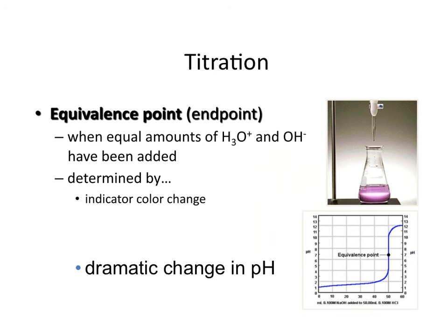During a titration, we have an indicator in our unknown solution. When we reach something called an equivalence point, we know that we have an equal amount of H3O+ and OH−, meaning neutralization has occurred. We determine this visually because the indicator changes color, and at that point we know we've reached the equivalence point.